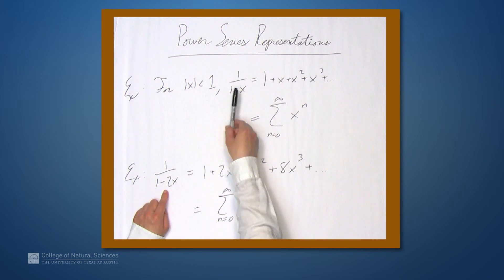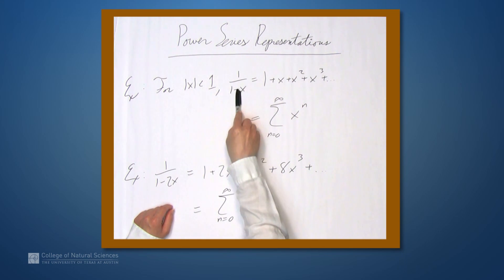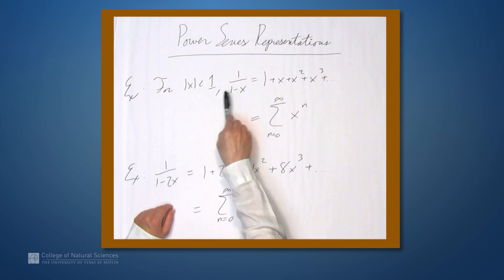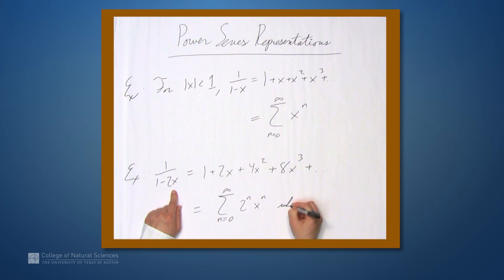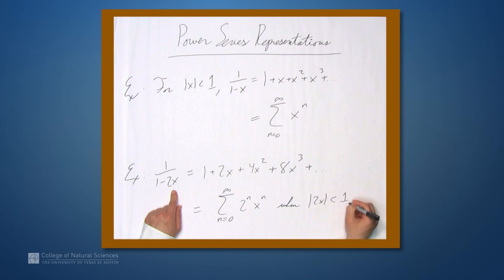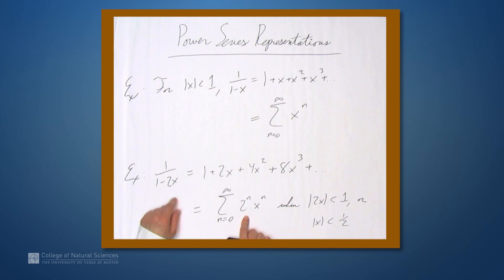In the original series we needed the absolute value of x to be less than 1, meaning whatever was being subtracted had to have absolute value less than 1. Here what's being subtracted is 2x, so this is true when the absolute value of 2x is less than 1 — in other words, when the absolute value of x is less than one half. So we have a power series representation that holds on the interval negative one half to one half.